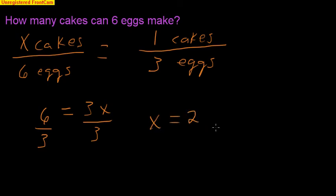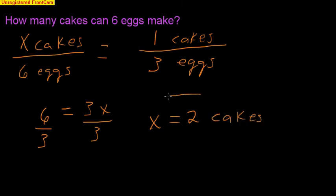Remember, in chemistry and all your science classes, you must put a unit on your numbers, because a number means nothing without a unit. So if I look back, what unit was on my x? Cakes. So I'm going to say 2 cakes. That was my unit, so x is equal to 2 cakes.